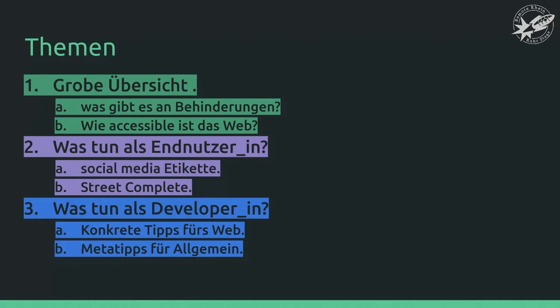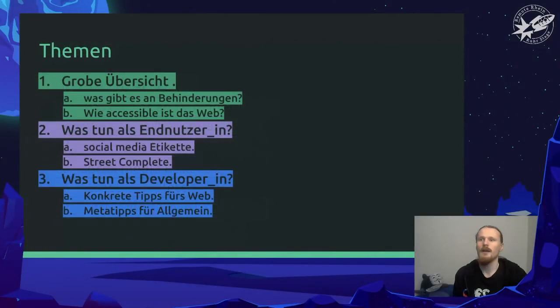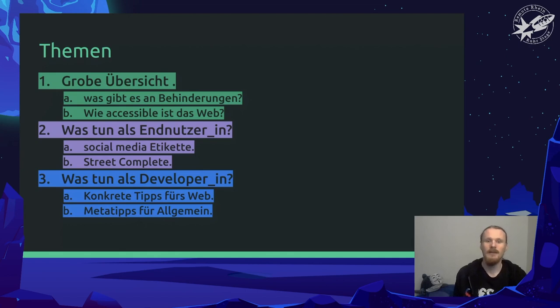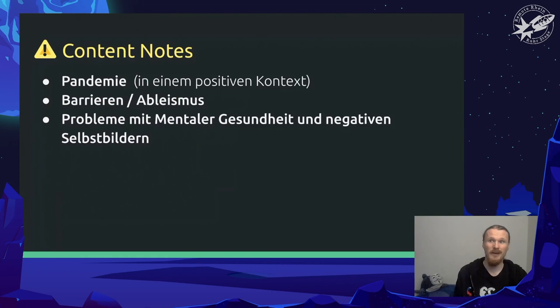This is the outline of the talk. We start with a rough overview. We will look at the different types of disabilities. We will also discuss how accessible the web currently is. I will give you a bit of advice on what you can do as a regular user and also as a developer. But first, a bit of content notes.